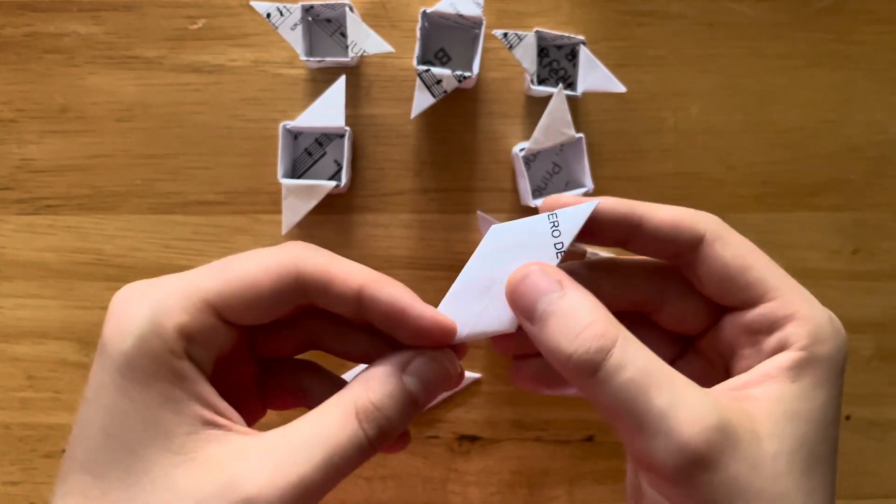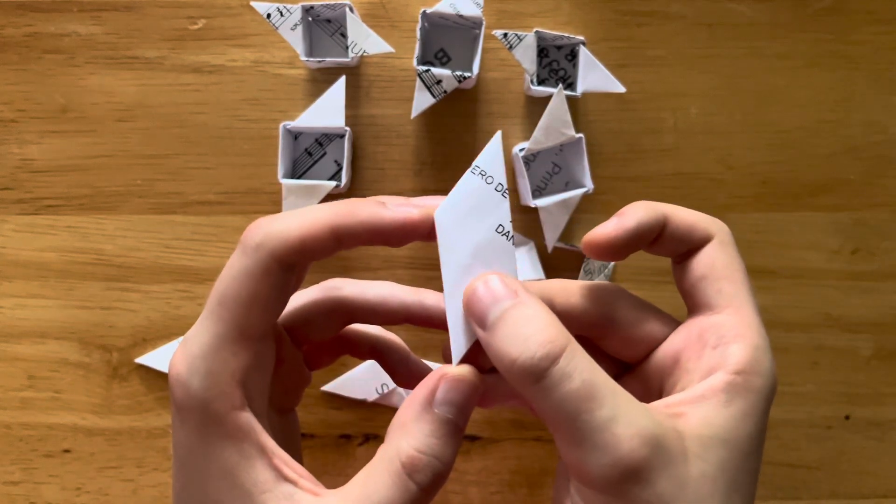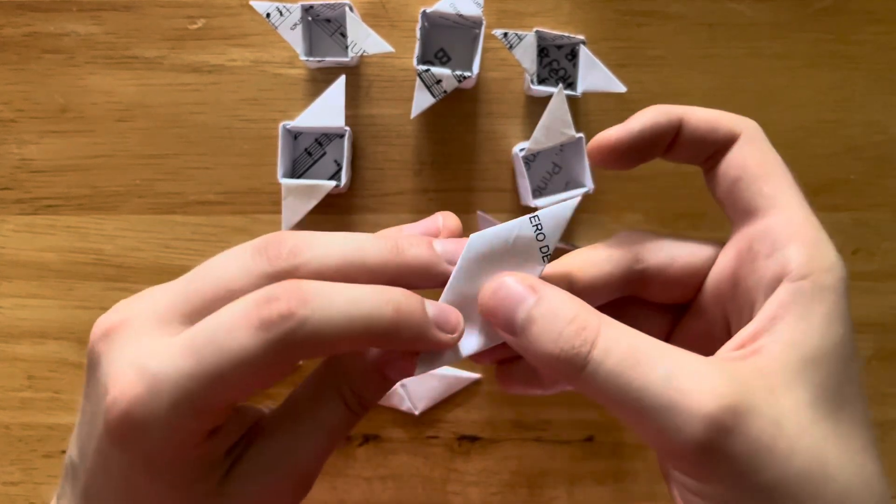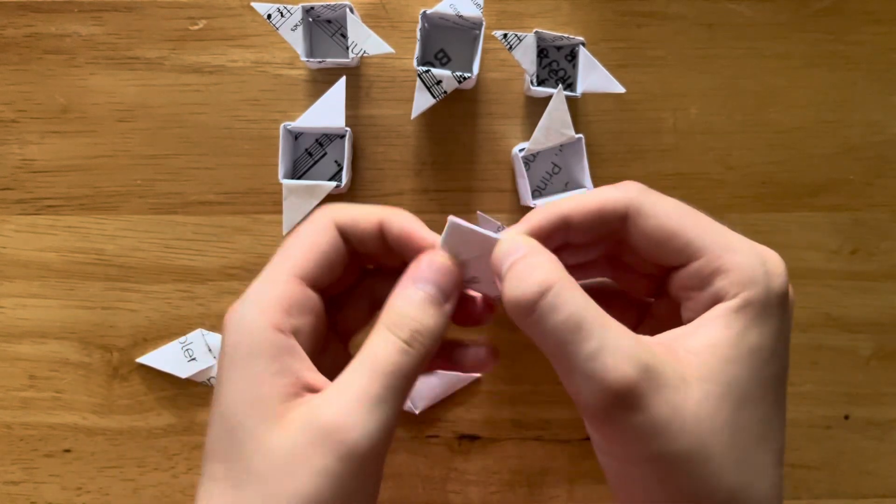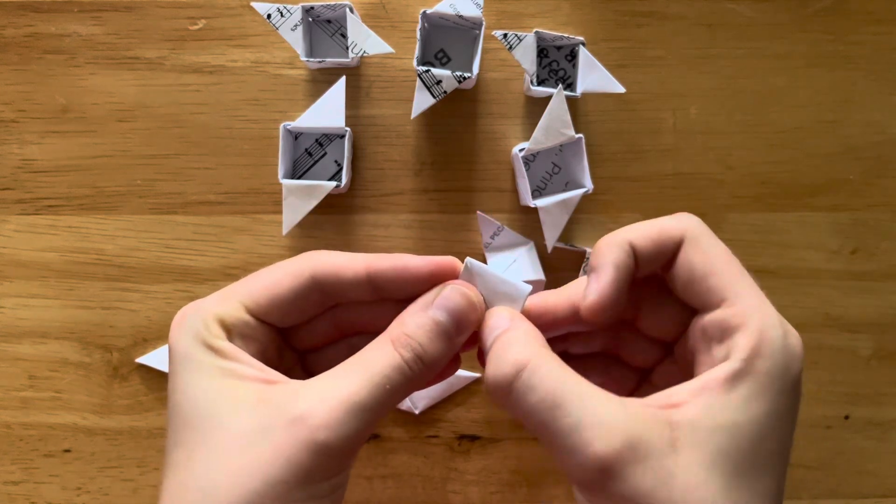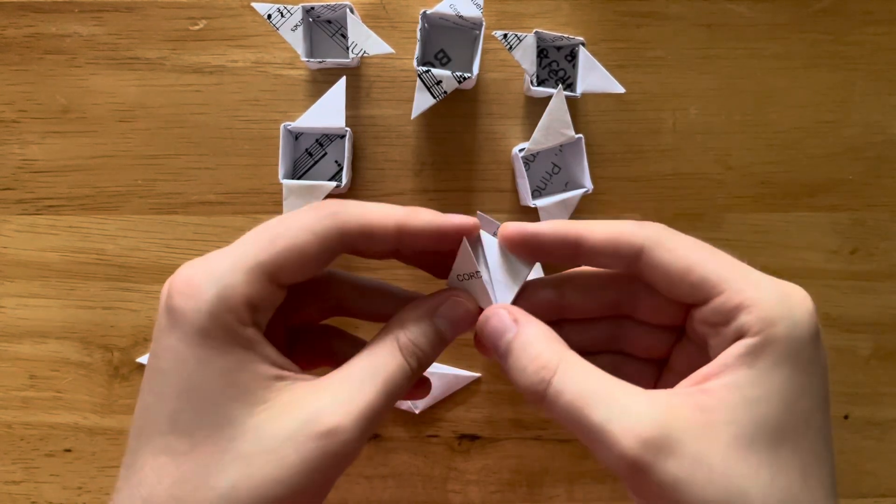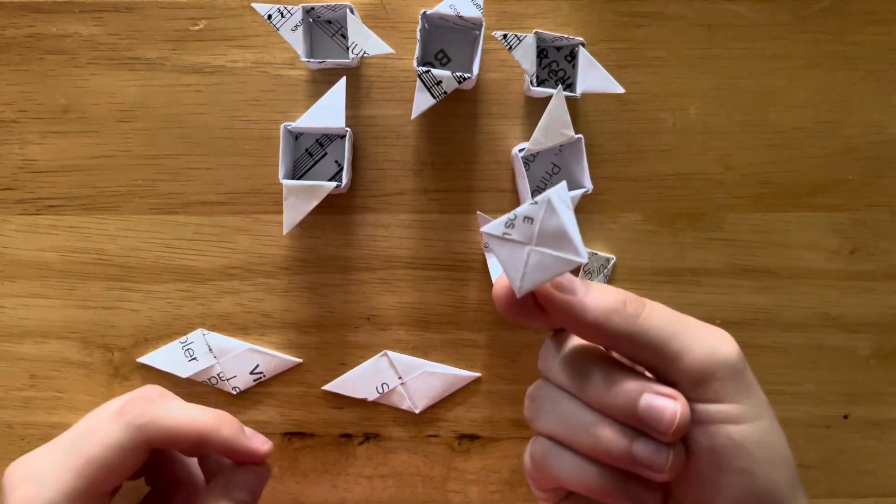With the white side up, you're going to bring both tips to their respective little points. So tip to point and tip to point. And then you're going to open it up about 90 degrees. So you get a little flat side.